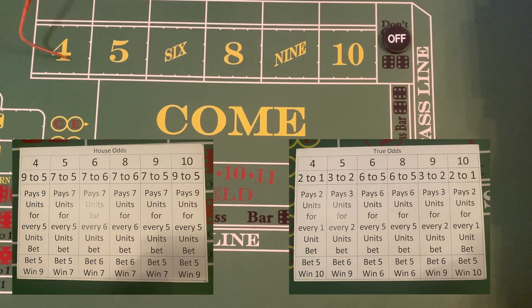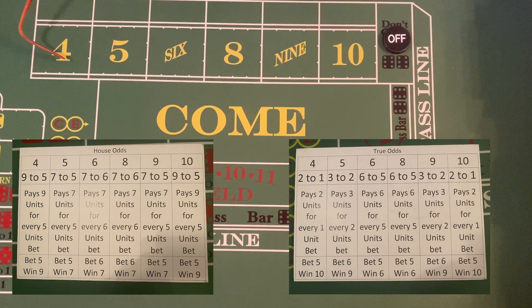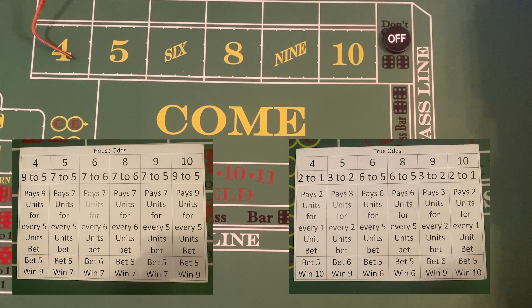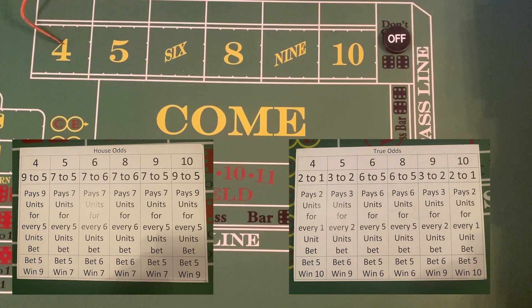Notice the house odds are only applicable to the box numbers — the numbers that can be placed: the 4, the 5, the 6, the 8, the 9, and the 10. What applies to the 4 will apply to the 10. So with house odds, if you make a bet and you win, sure you're happy because you're making some money and getting your winnings; however, it is not paid at the correct odds.